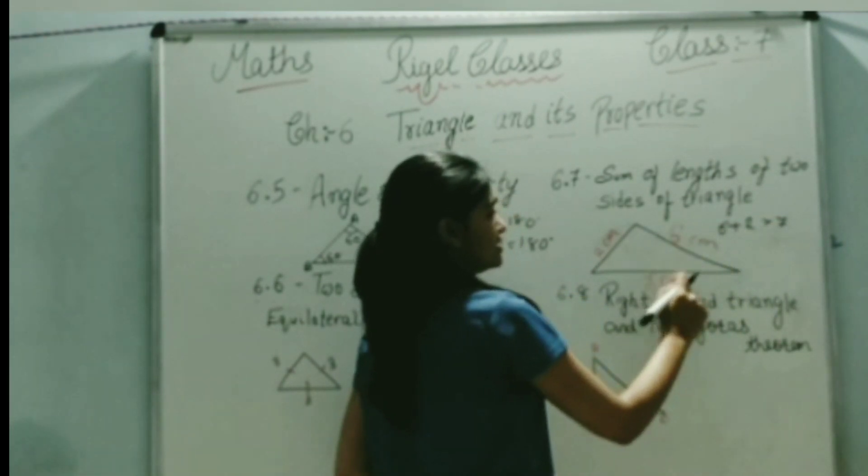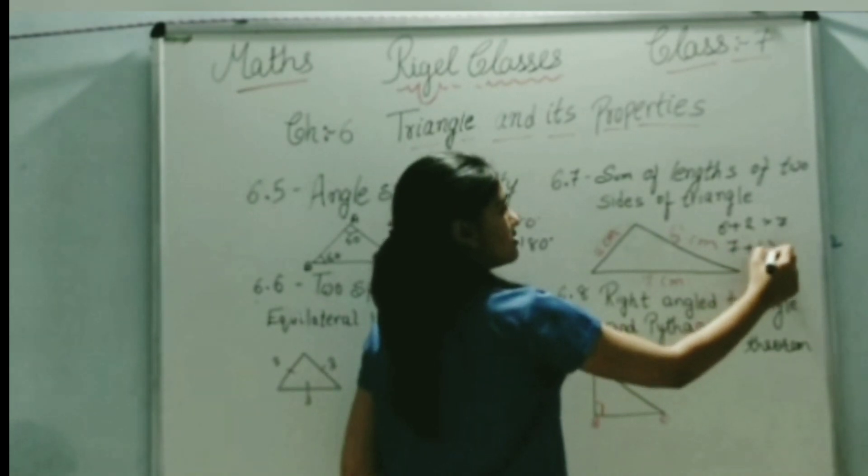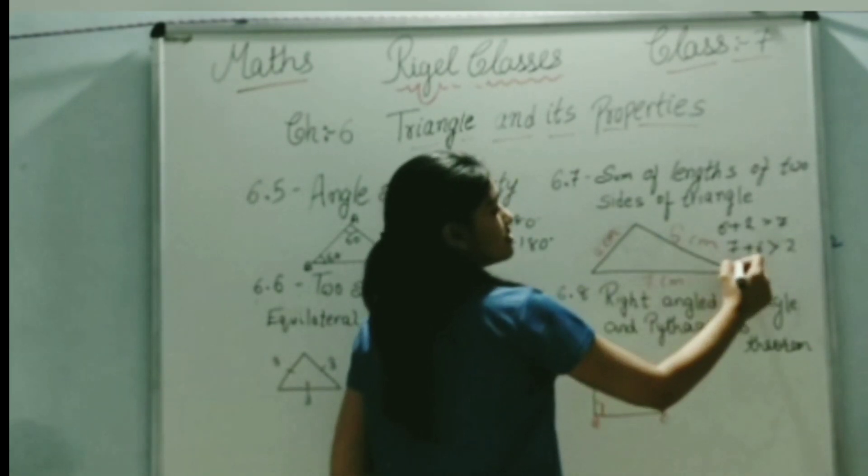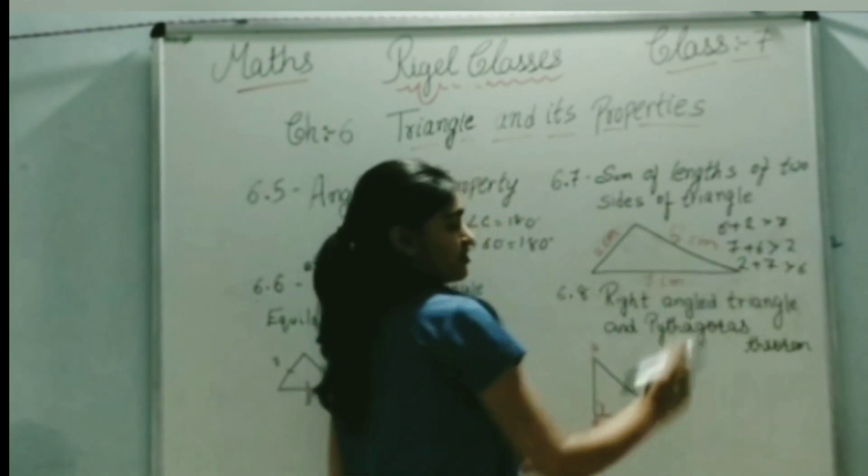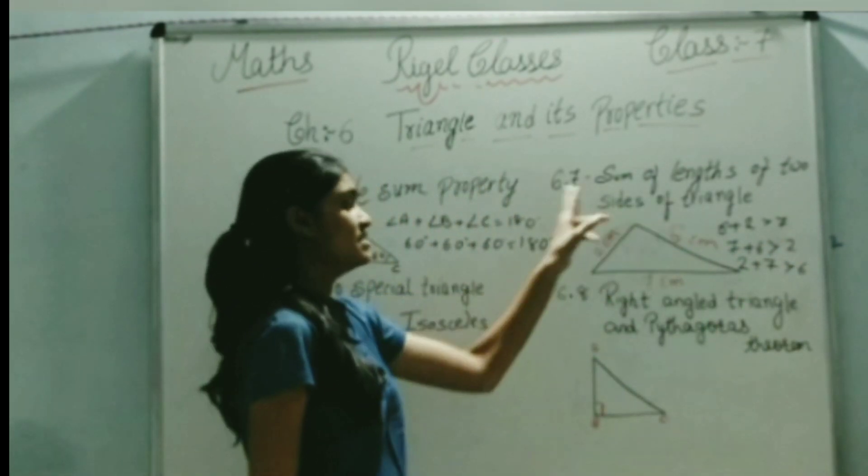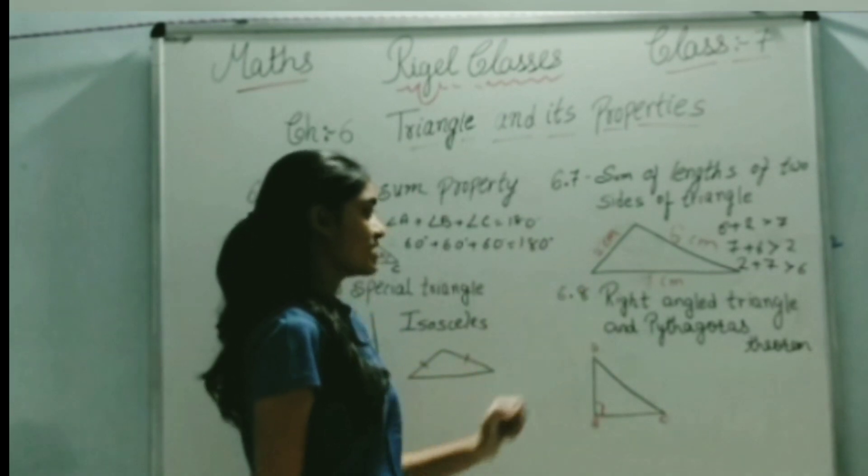Then we can verify with another combination. 7 plus 6 is also greater than 2, and 2 plus 7 is also greater than 6. If all three conditions are satisfied, then and only then can a triangle be drawn.